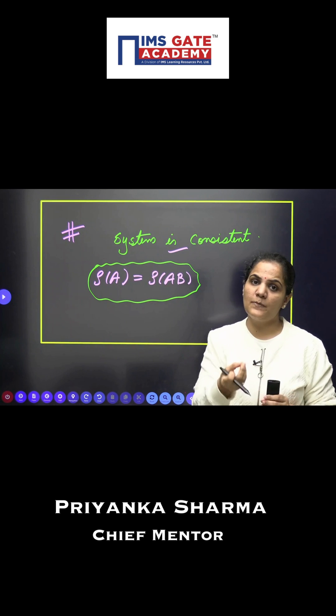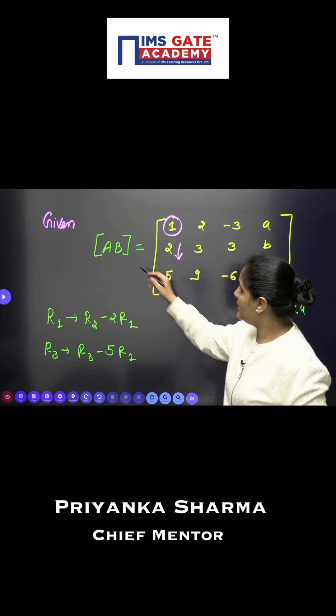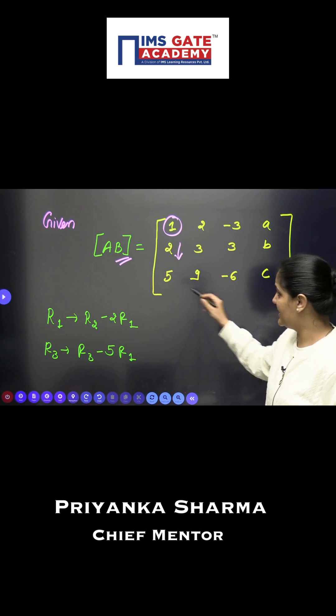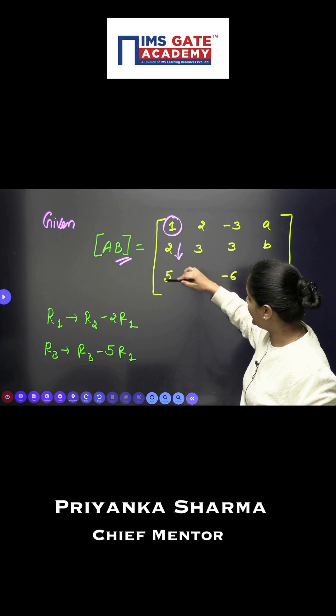We can use the basic concept that rank of A equals rank of AB. When I work with the augmented matrix AB, the very first element is one. I will try to make all the elements below this zero.